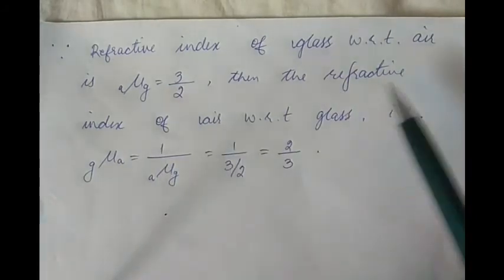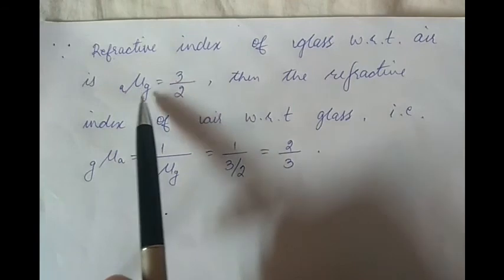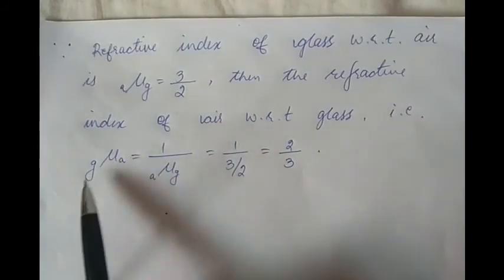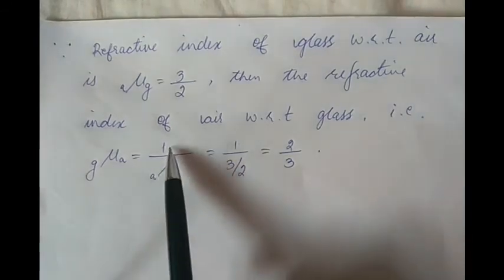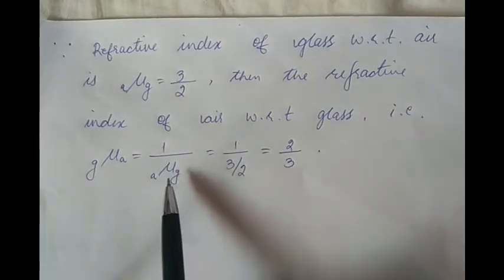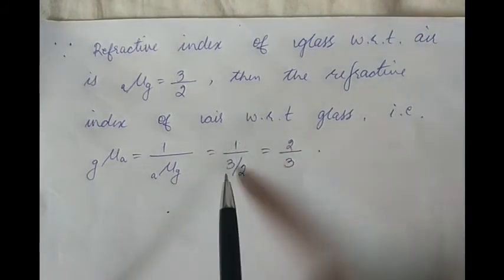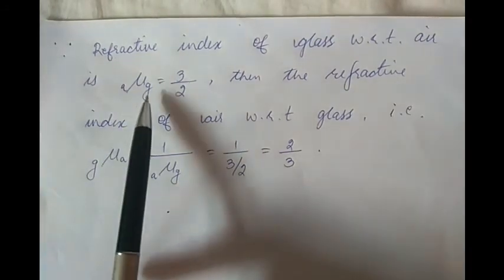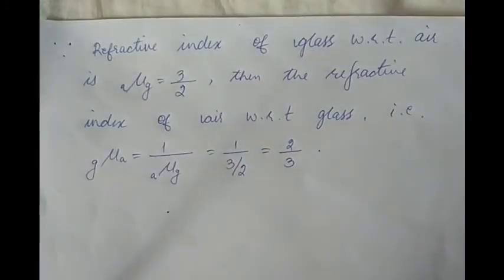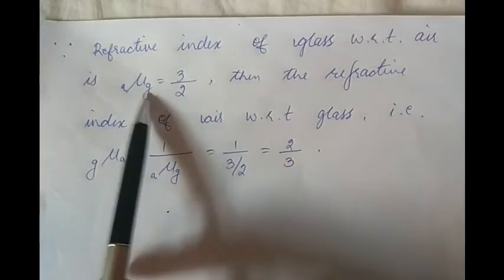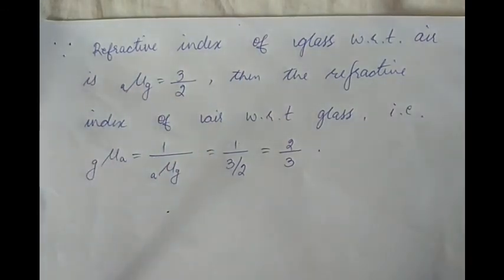For example, since the refractive index of glass with respect to air, μ_GA, is 3/2, then the refractive index of air with respect to glass, μ_AG, from the principle of reversibility equals 1 / μ_GA, which is 1 / (3/2) = 2/3. So when we know the refractive index of glass with respect to air, we can easily find the refractive index of air with respect to glass. This holds true for any pair of media.